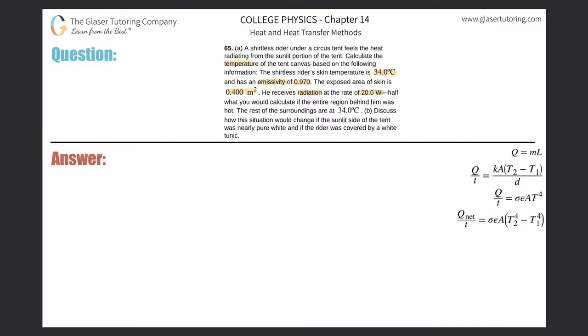The rest of the surroundings is 34. Okay, so we're talking about radiation, right? Two different temperatures. Basically, we're asked to calculate the temperature of the tent and they give us the temperature of the skin. So we're going to use that formula over there.